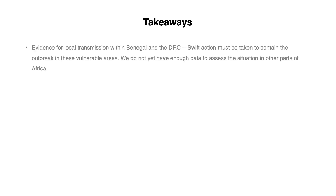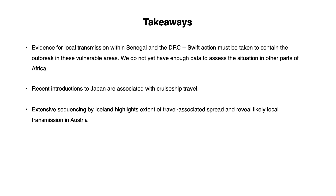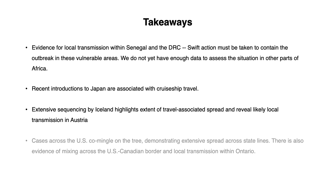Overall, here are some takeaways from this report. We find evidence for local transmission within Senegal and the DRC, and swift action must be taken to contain the outbreak in these vulnerable areas. We do not yet have enough data to assess the situation in other parts of Africa. The recent introductions to Japan are associated with cruise ship travel. The extensive sequencing by Iceland highlights the extent of travel-associated spread and reveals likely local transmission in Austria. The cases across the US co-mingle on the tree, demonstrating extensive spread across state lines, and there is also evidence of mixing across the US-Canadian border and local transmission within Ontario.